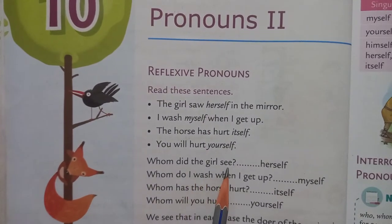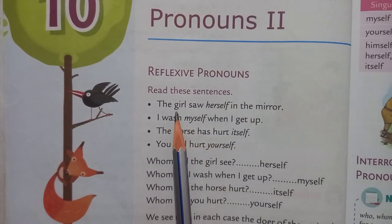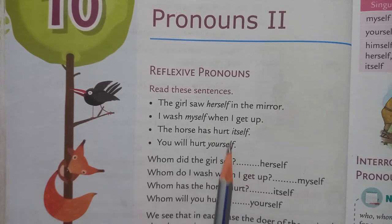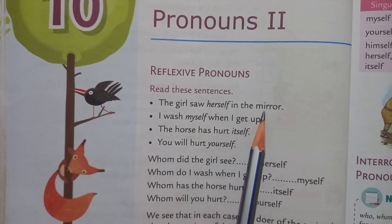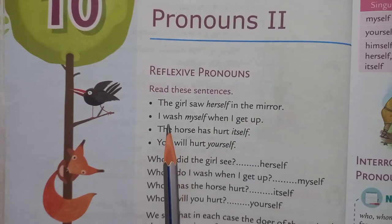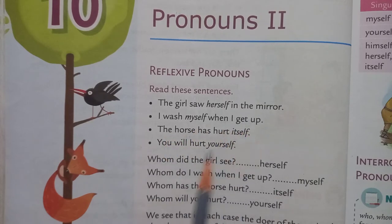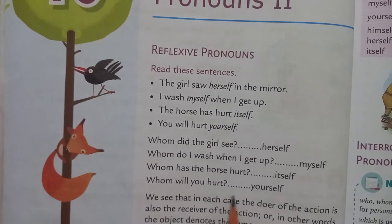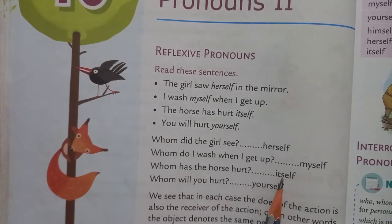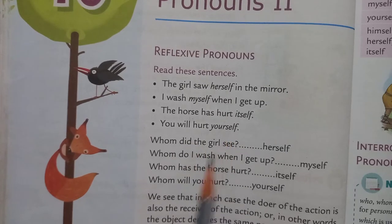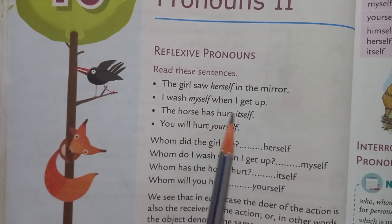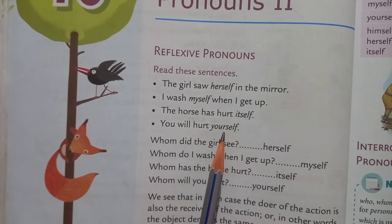Whom did the girl see? In this sentence, it is asking whom did the girl see — herself, means khud ko. I wash myself when I get up — whom do I wash? Myself. The horse has hurt itself — who has the horse hurt? Itself. You will hurt yourself — whom will you hurt? Yourself. So here, herself, myself, itself, yourself are reflexive pronouns.